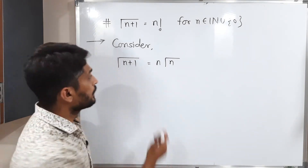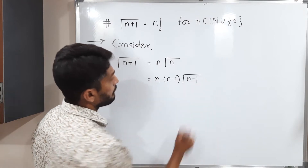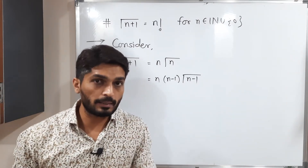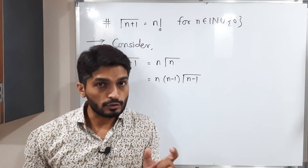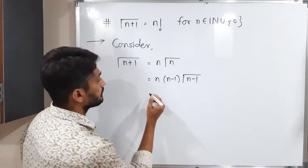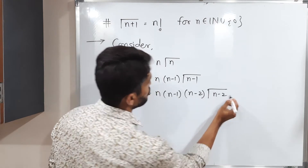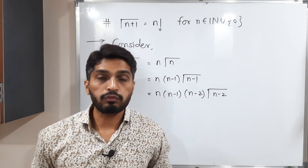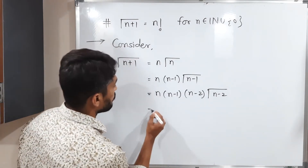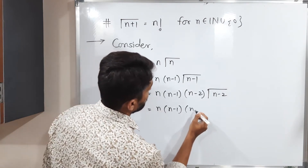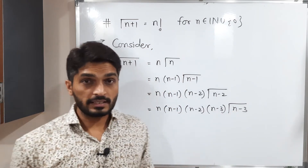Now I'm going to apply the same property again for γ(n). We get n·(n−1)·γ(n−1). Applying it again for γ(n−1), we get (n−2)·γ(n−2), giving us n·(n−1)·(n−2)·γ(n−2). Applying once more, we get n·(n−1)·(n−2)·(n−3)·γ(n−3).